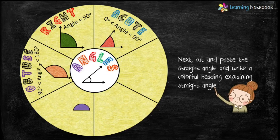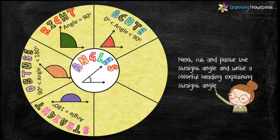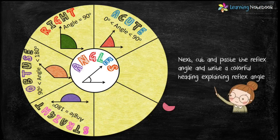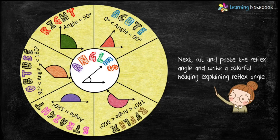In the same way, cut and paste a straight angle, extend its line, and write a colorful heading with its property that straight angle equals 180 degrees. Now let's cut and paste the reflex angle — to cut the reflex angle you can take the remaining portion of the obtuse angle. Write a colorful heading mentioning the property of reflex angle that it is greater than 180 degrees but less than 360 degrees.